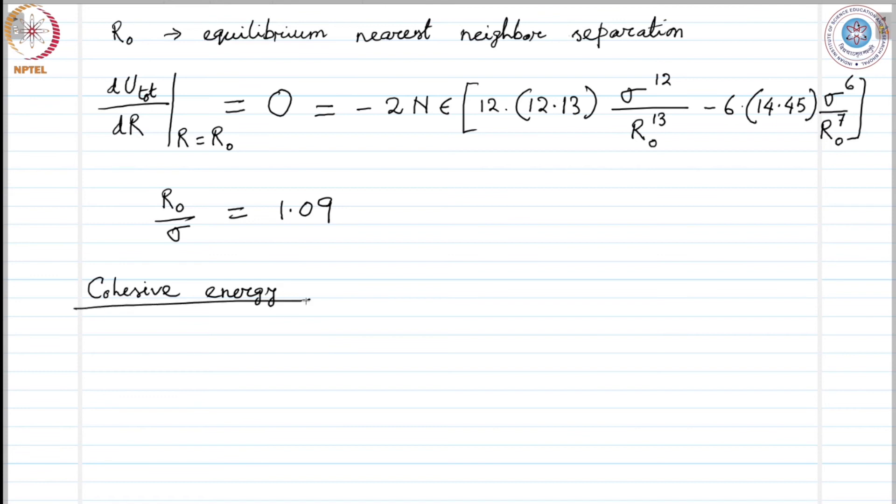After determining this, can we find the cohesive energy? The cohesive energy of the inert gas crystals at absolute zero and at zero pressure, when there is no external pressure, is obtained by putting the value of r_naught in the expression of U_total. U_total at r equals r_naught gives us the cohesive energy, which is minus 2.154 N epsilon. This expression is the same for all inert gas crystals.